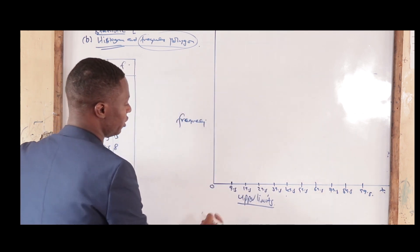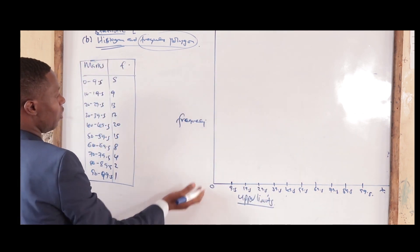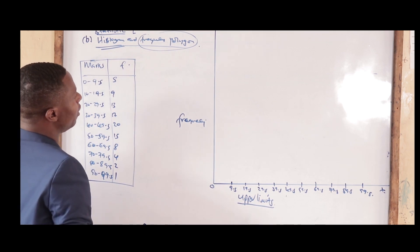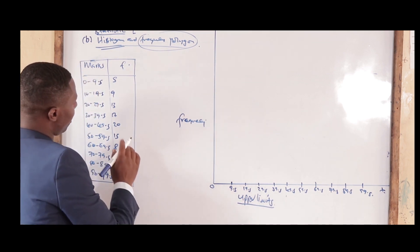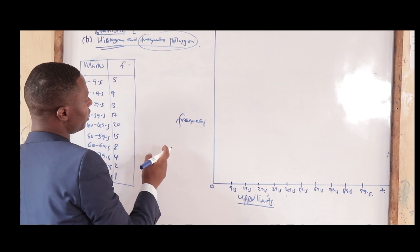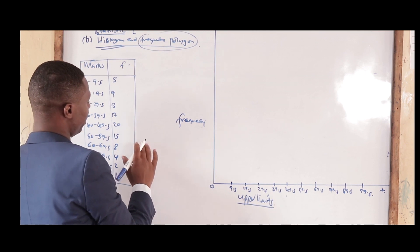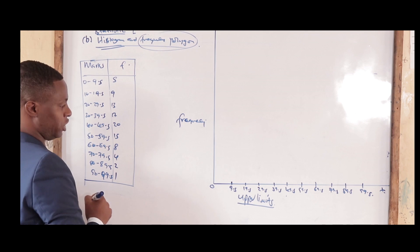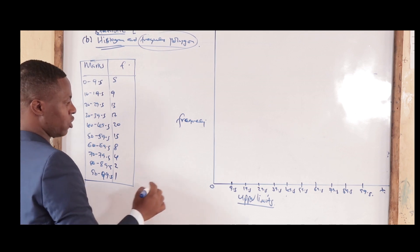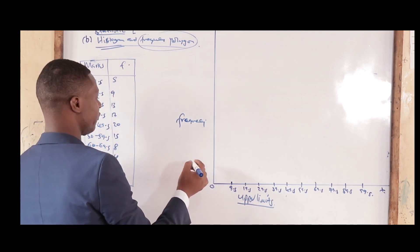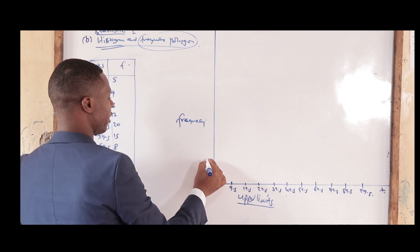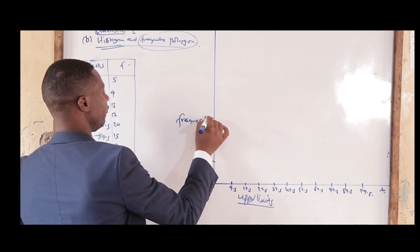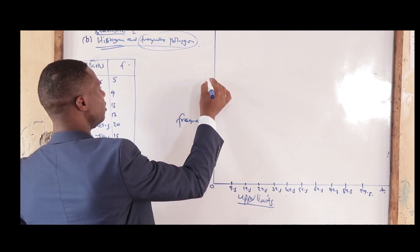The upper limits go on the lower side and on the upper side of the x-axis, and on the y-axis you have the frequency. From the table, you have to get a good scale. The highest frequency here is 20, so on your graph you are going to use the values 5, 10, 15, and 20.